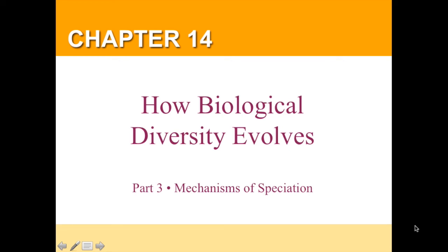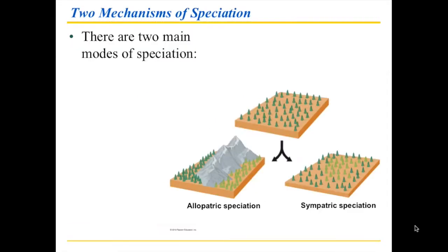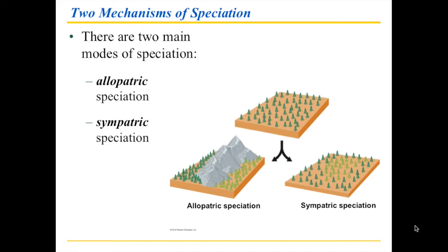Now that we've figured out what species are, how to define them, and what keeps species apart, let's figure out how branching or non-branching patterns of evolution actually produce species in nature. Let's investigate the mechanisms of speciation. There are really two main modes of speciation. These are called allopatric and sympatric.